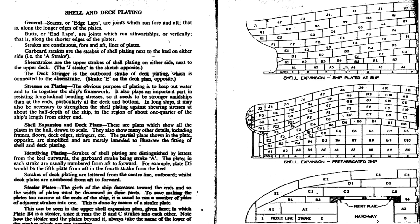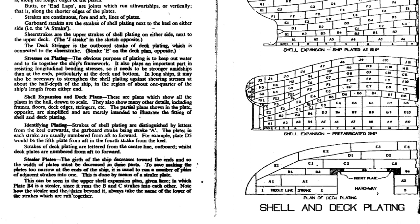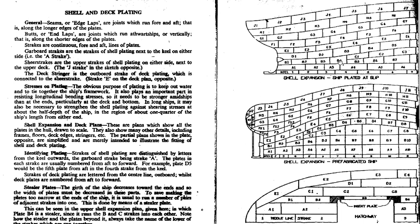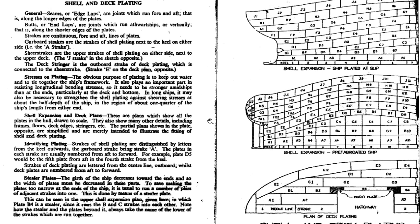You may have a question about which name the steeler plate takes. It takes the name of the lower strake — that is why you see B3, B4, and then B5; it does not take the upper plate name. Plate B4 is a steeler since it runs the B and C strakes into each other, making two strakes run into one, reducing the overall number of strakes because the ship's girth is also decreasing. The steeler and the plate beyond it always take the name of the lower of the strakes which run together.